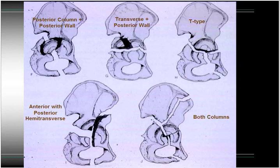The difficulty with the T-type fracture is that the posterior and anterior columns are both fractured and are no longer associated to one another. So obtaining a reduction of one column does not affect reduction of the opposite column. If you were to approach this T-type fracture posteriorly and reduce the fracture in the sciatic notch, that is not necessarily going to result in reduction of the anterior column. These fractures typically require either an extensile approach or a combination of anterior and posterior approaches.